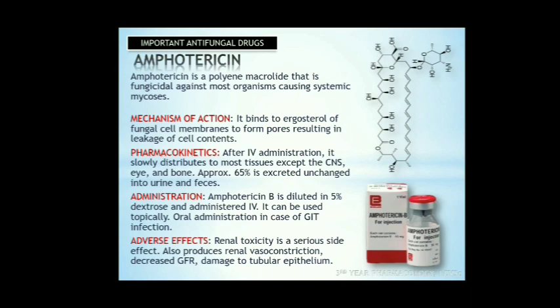The first important antifungal drug is amphotericin. Amphotericin is a polyene macrolide that is fungicidal against most organisms causing systemic mycoses. It binds to ergosterol of the fungal cell membrane to form pores, resulting in leaking of cell contents and finally death of the fungi. After IV administration, it slowly distributes to most tissues except the CNS, eye, and bone. Approximately 65% is excreted unchanged in urine and feces. Amphotericin is generally administered IV with 5% dextrose. It can be used topically, and oral administration can be used for GI tract infections. Adverse effects include renal toxicity as a serious side effect, reduced renal vasoconstriction, decreased glomerular filtration rate, and damage to tubular epithelium.